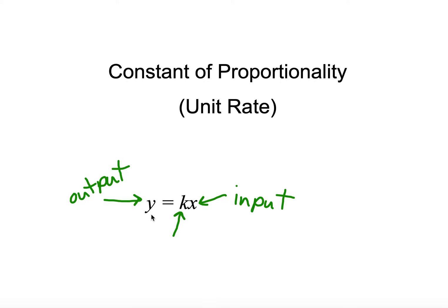So we have the constant of proportionality, or the constant right here, which is represented with k. x is our input. And y is our output. And this is called a direct variation. Let's see how we can use this in real life.